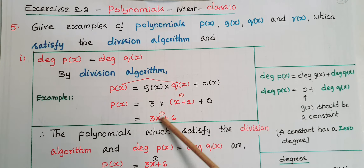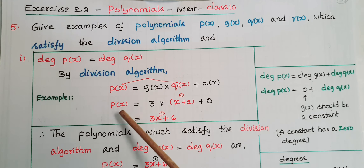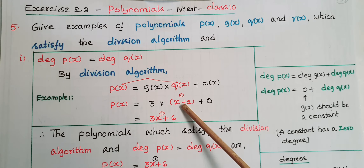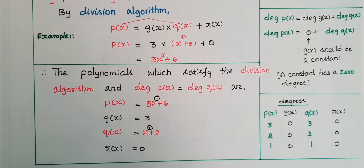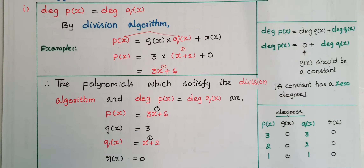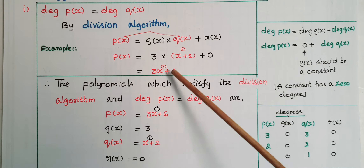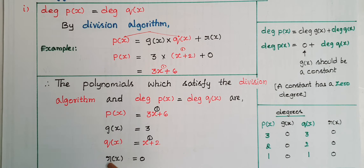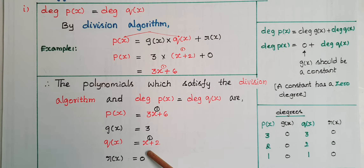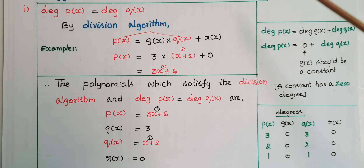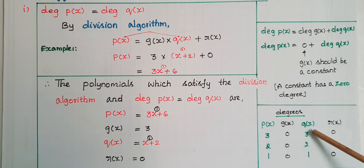Then p(x) = 3·(x + 2) + 0 = 3x + 6. So the polynomials satisfying the division algorithm with degree of p(x) equal to degree of q(x) are: p(x) = 3x + 6, g(x) = 3, q(x) = x + 2, and r(x) = 0. You can assume any such polynomials where degree of q(x) equals degree of p(x).